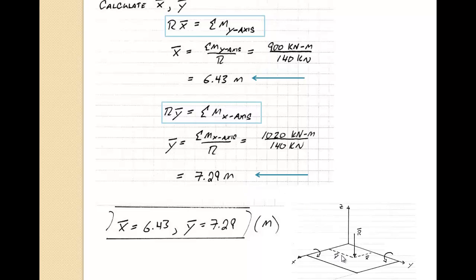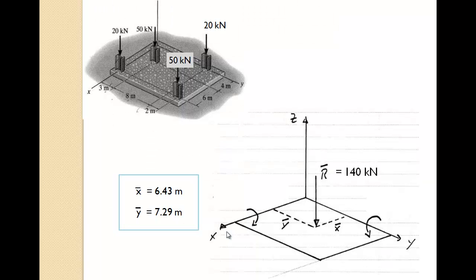So again, the y-bar location is the distance from the x-axis, and the x-bar location is the perpendicular distance from the y-axis. So we get the location of the resultant force to be x equals 6.43 meters and y equals 7.29 meters.